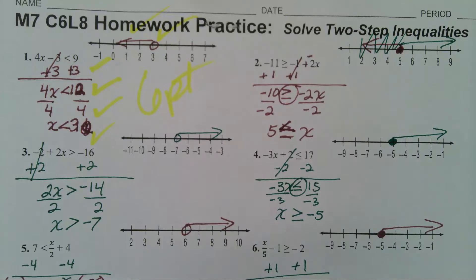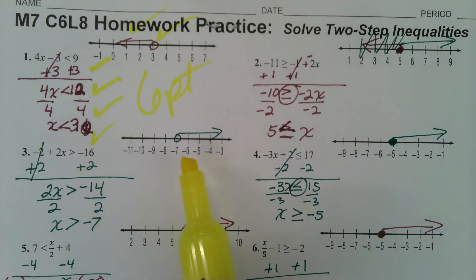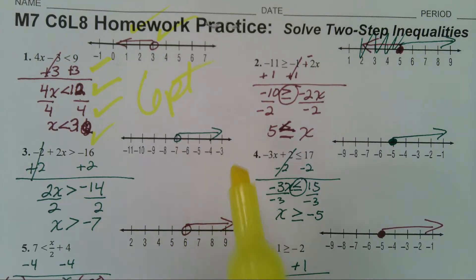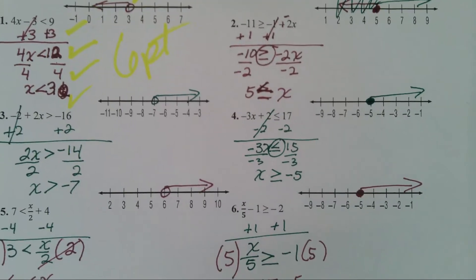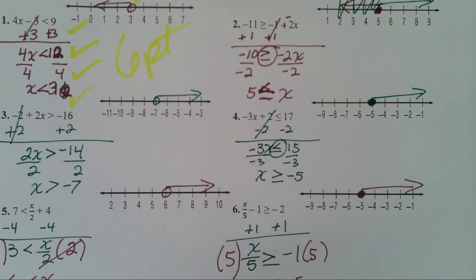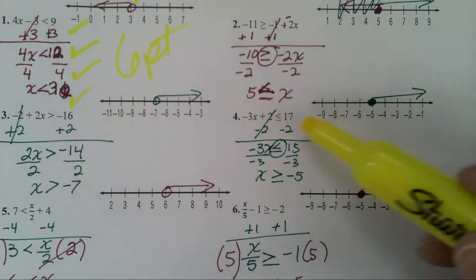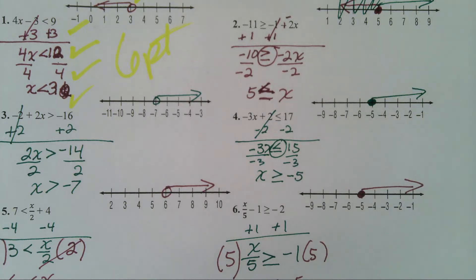Open circle on the negative 7, going to the right. Number four. You have to get rid of a plus 2, so you subtract 2 from both sides.